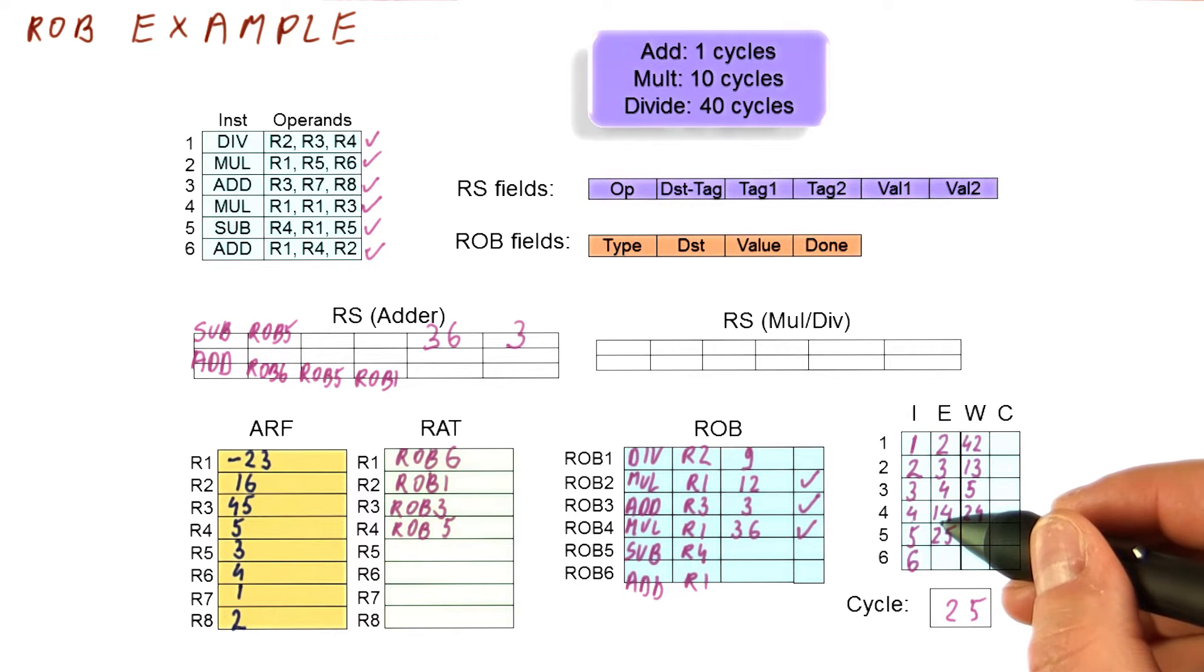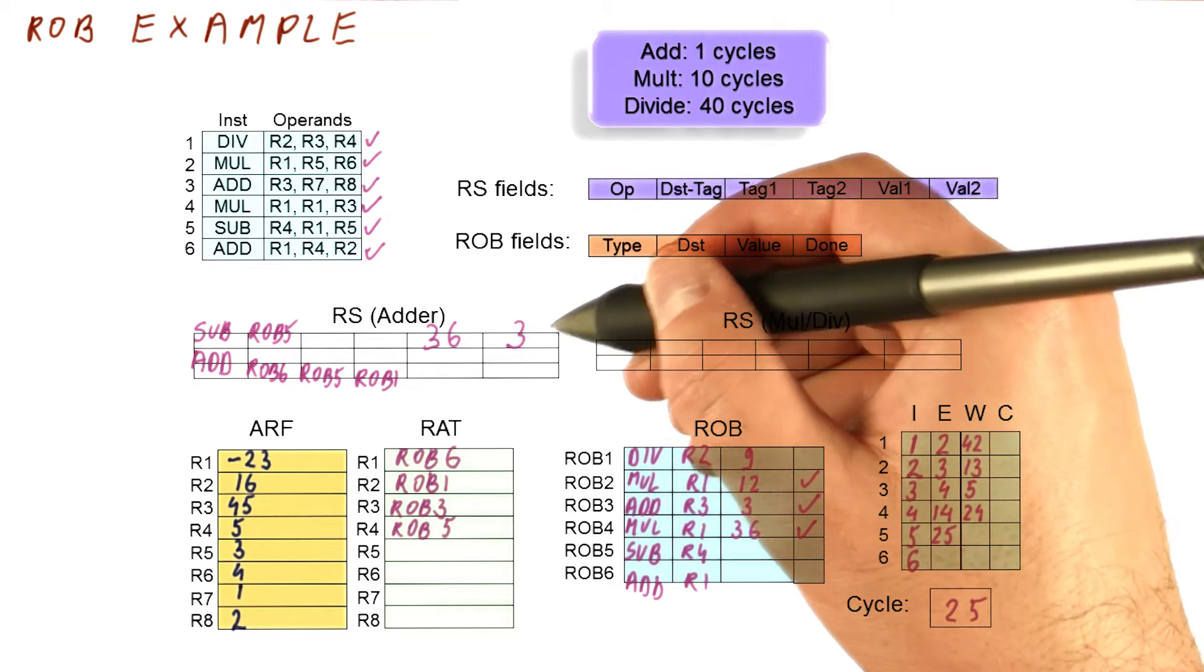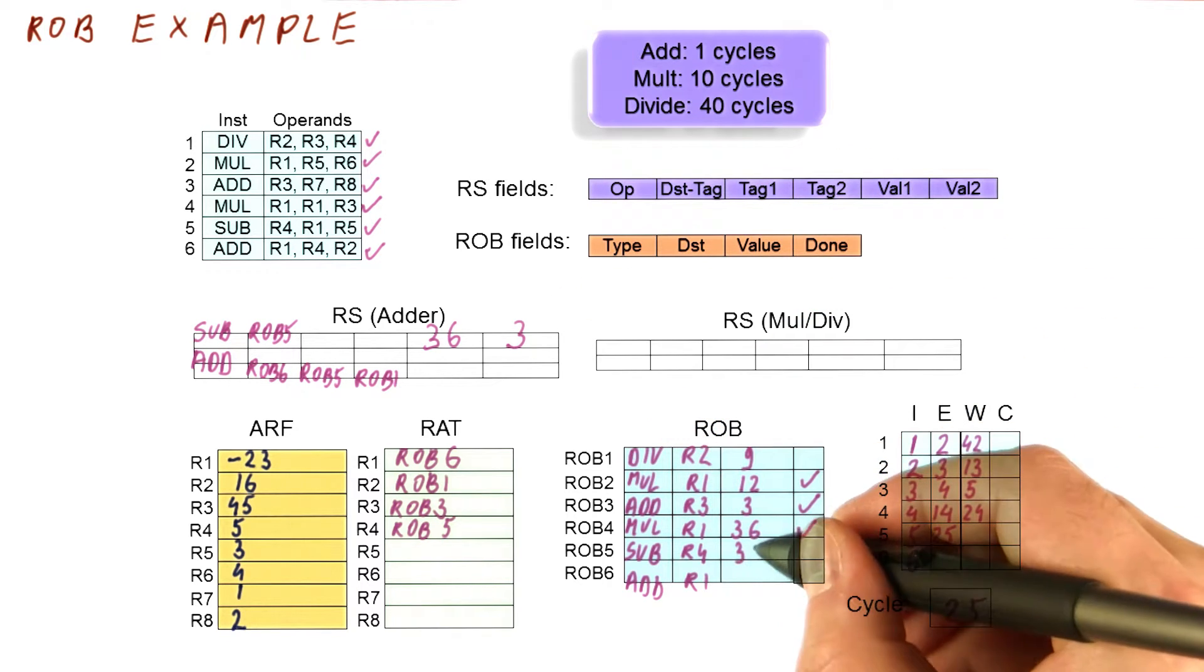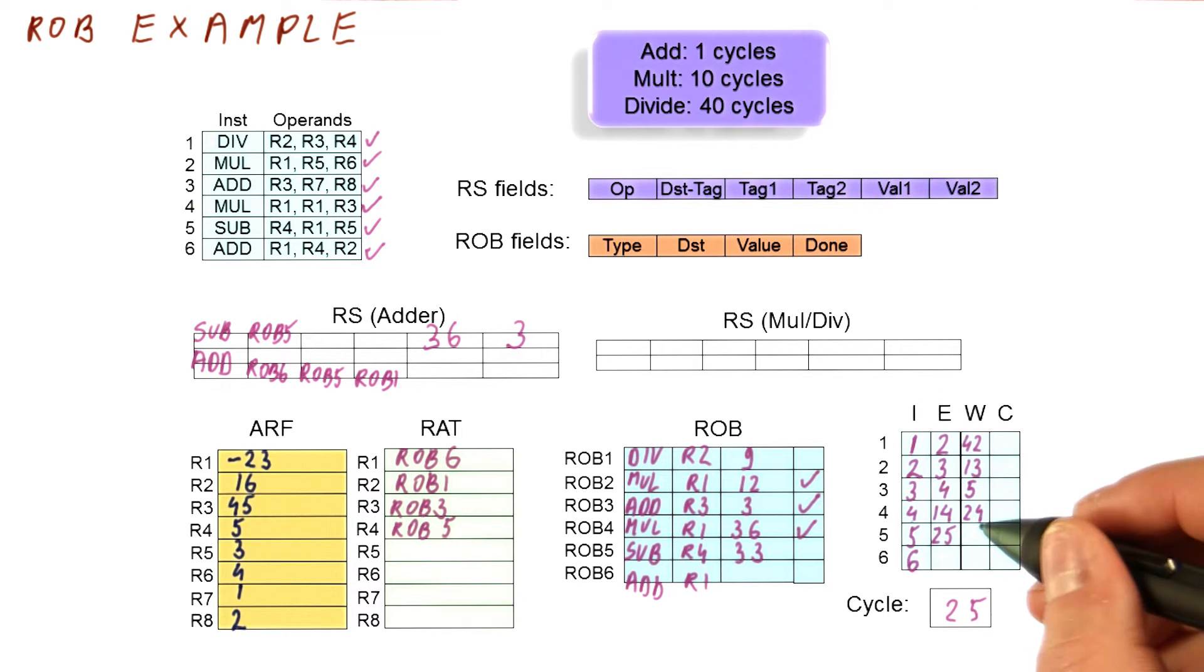So we begin executing this instruction. It's a subtraction of 36 minus 3, the result is going to be 33. And it takes only one cycle to do adds and subtracts, so this result will be broadcast in cycle 26.